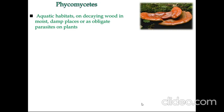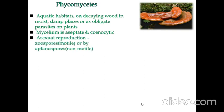Phycomycetes live in aquatic habitats, on decaying earth in moist and damp places, or as obligate parasites on other plants. Their mycelium is aseptate and coenocytic with many nuclei. Their asexual reproduction is done by zoospores, which are motile, or by aplanospores, which are non-motile. These spores are produced in a sporangium.